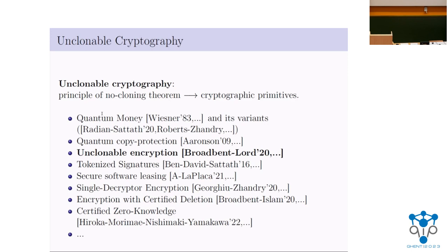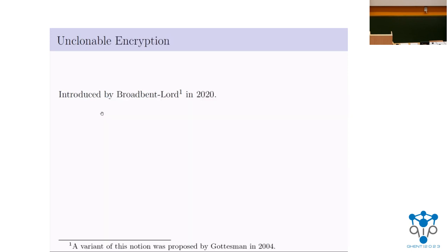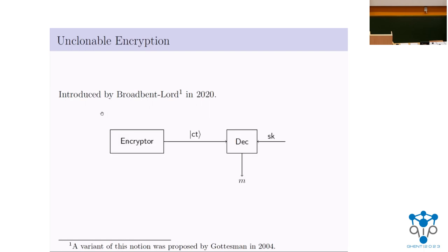The topic of today's talk is Unclonable Encryption. This was first introduced by Broadbent and Lord in 2020. Unclonable Encryption is just like a regular encryption scheme, except that the ciphertext will be associated with a quantum state — so the ciphertext is a quantum state. In terms of functionality, it's the same as regular encryption: there's a decryption algorithm that, given the ciphertext state and a decryption key, can recover the encrypted message.